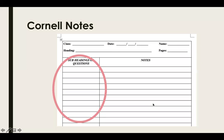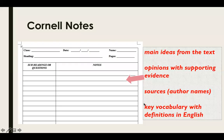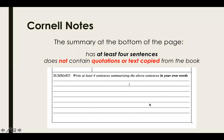The left-hand column only contains questions and subheadings. The right-hand column contains main ideas from the text, opinions with supporting evidence, sources and author names if you researched related information, and key vocabulary with definitions in English. The summary at the bottom of the page is intended to summarize what you read. The summary has at least four sentences and does not contain quotations or text copied from the book.